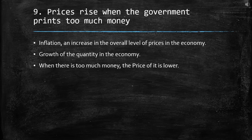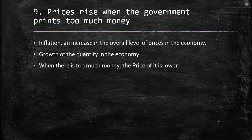The ninth principle is that prices rise when the government prints too much money. When we have too much money in the economy, we have what is called inflation. Inflation is an increase in the overall level of prices in the economy. The growth of the quantity of money in the economy causes inflation. When there is too much money, the price of that money is still lower. For example, when there are more people with more money, with just one dollar I cannot buy the same thing I could before. So it depends on the quantity of money.